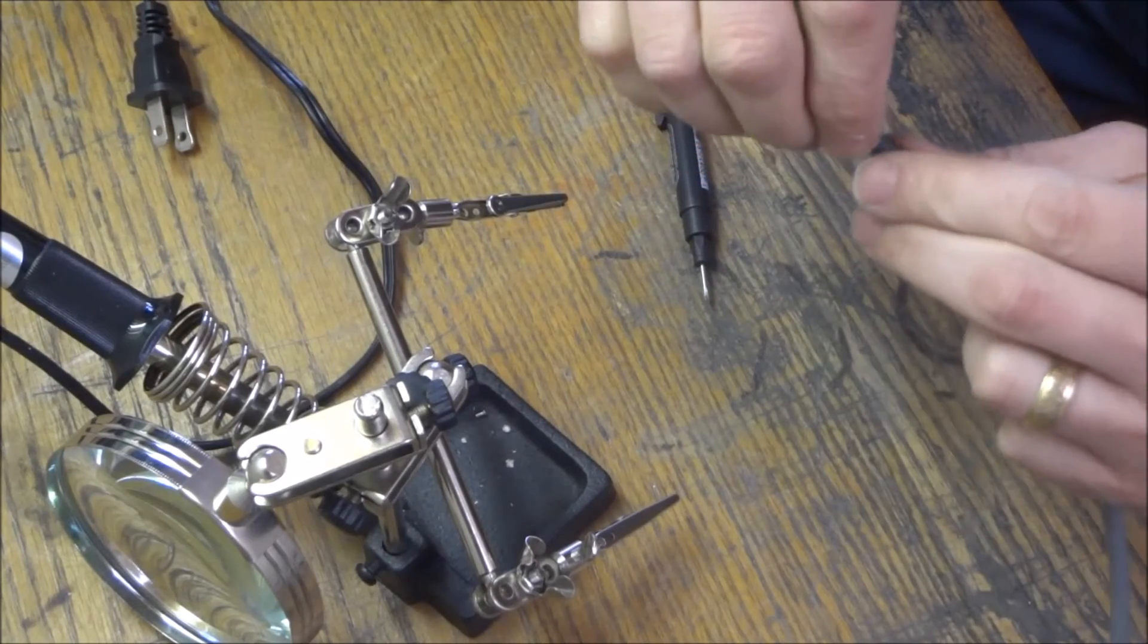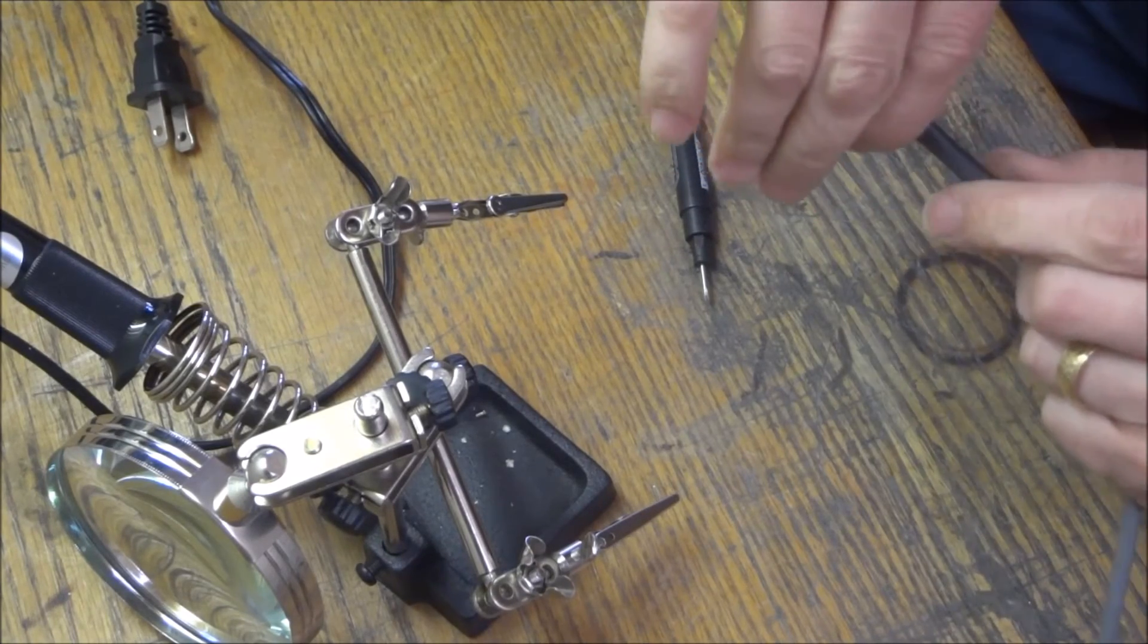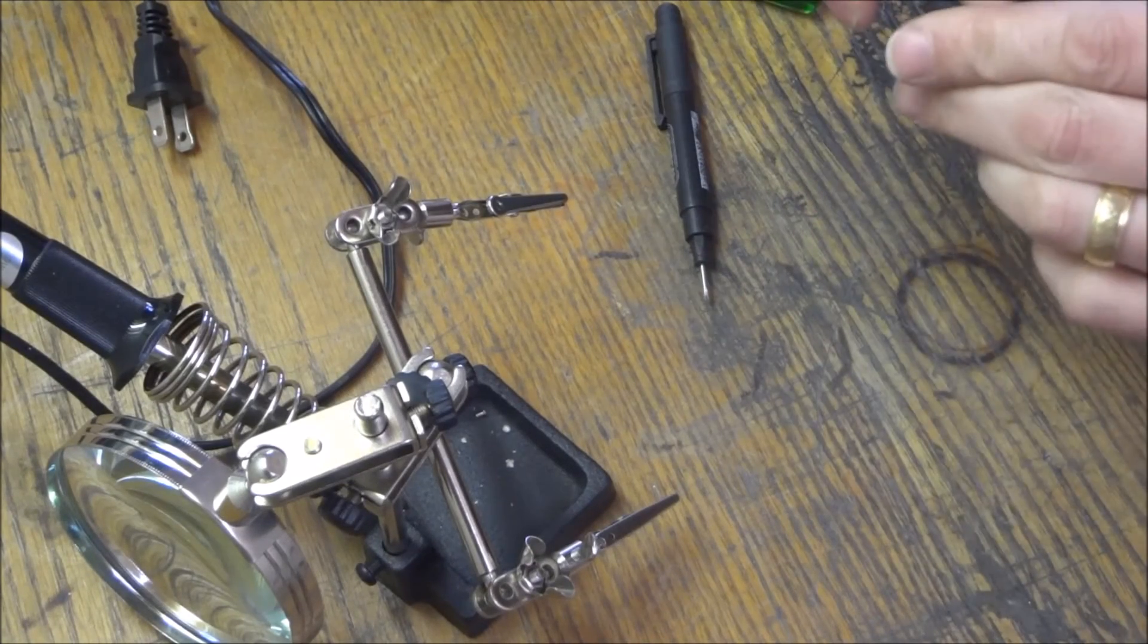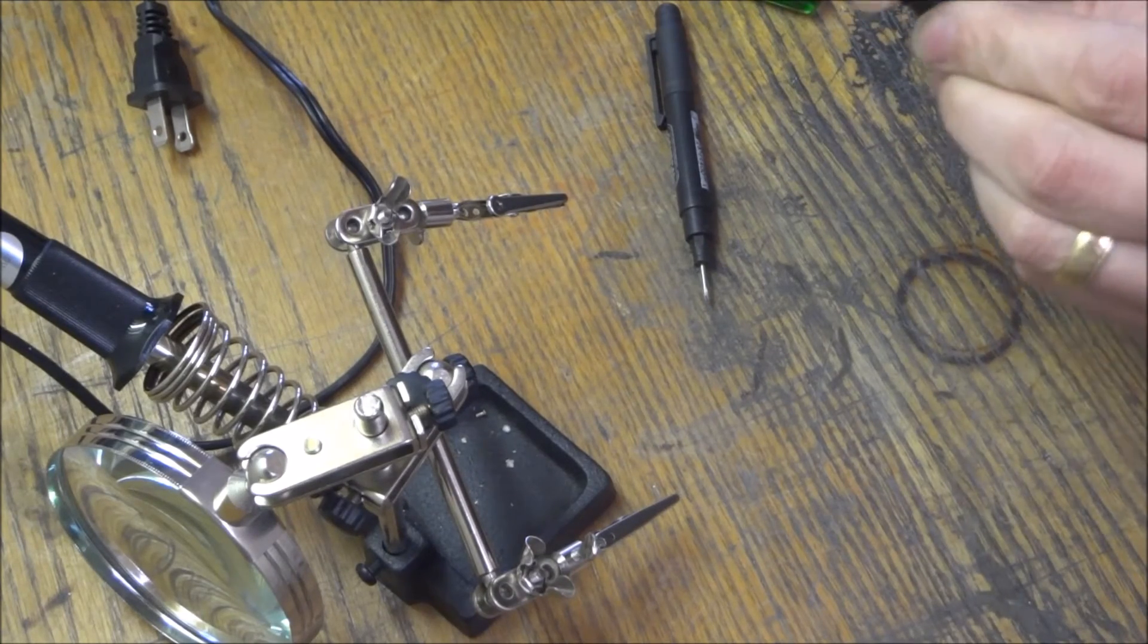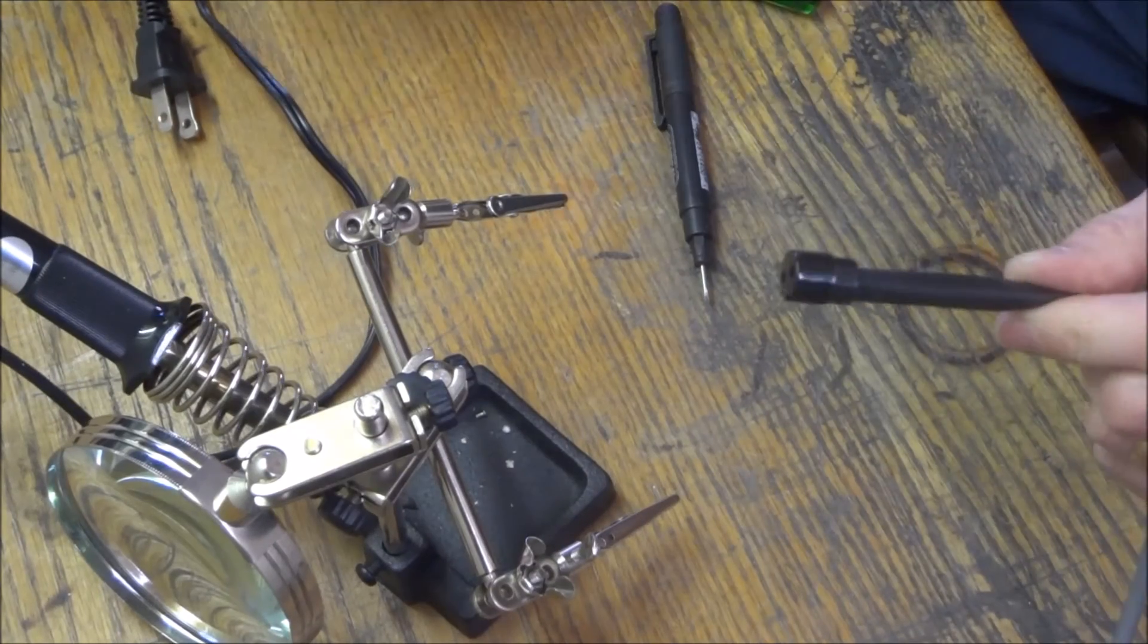Slide the heat shrink up. Fold the white wire back, not using right now. Slide that over our terminals. Shrink it.